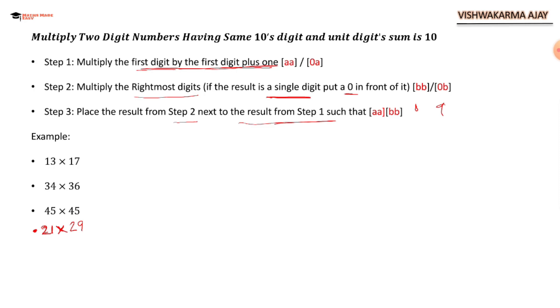13 times 17. As the condition says, we have the same tens digit. This is the unit, this is the tens place. At the tens place, the numbers are the same. The second condition: unit digit sum should be 10. So 3 plus 7 is 10.